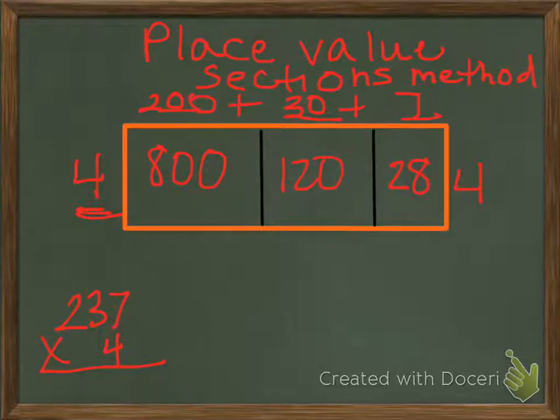Now that you have your three numbers inside, or your three partial products, you will add those partial products to find your actual product. So you have 800 plus 120 plus 28.